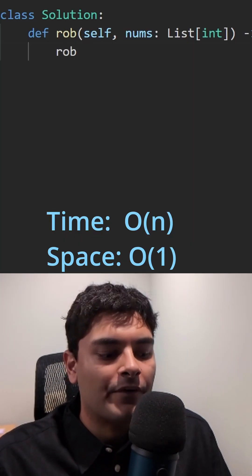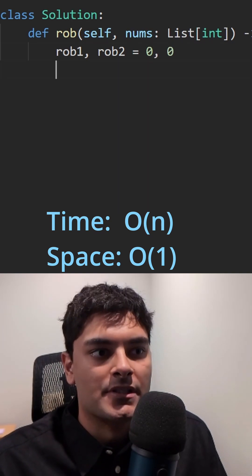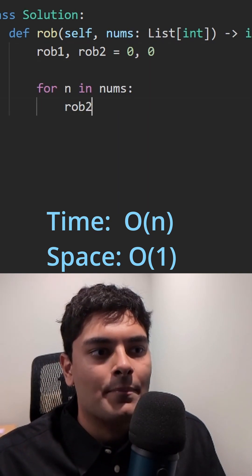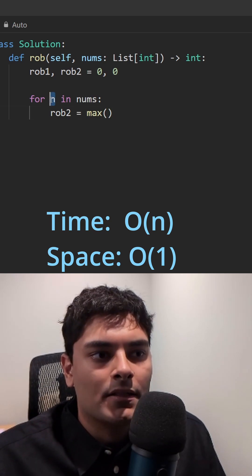I'm going to have a couple of variables called rob one and rob two. These are going to be the results of the last two subproblems. I'm going to update rob two, which is the max amount we can rob up until the current element.